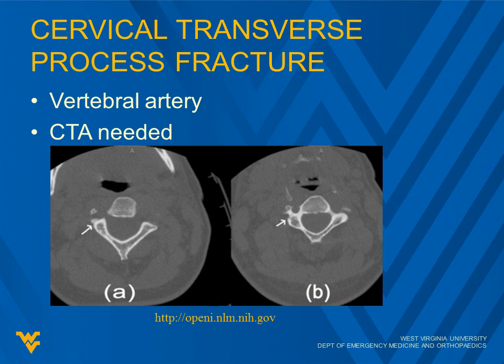For cervical transverse process fractures, the major thing to remember is that the vertebral artery runs right through that area. When you see a fracture involving the transverse process or into the vertebral foramen, you need to get a CT angiogram to evaluate for artery dissection or injury.